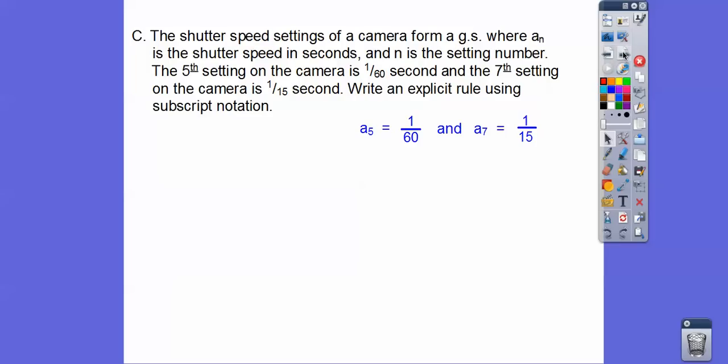All right, so they gave us the fifth term and the seventh term right there. When we go from the fifth term to the seventh term, we go through the sixth term. Remember, it goes, here's a sub 1, a sub 2, a sub 3, a sub 4, a sub 5, a sub 6, a sub 7, but they gave us the fifth and the seventh right here. So let's go ahead and put those numbers in their place right here.